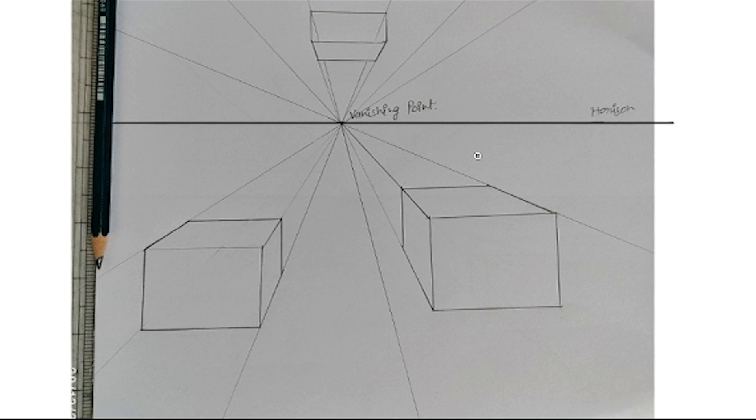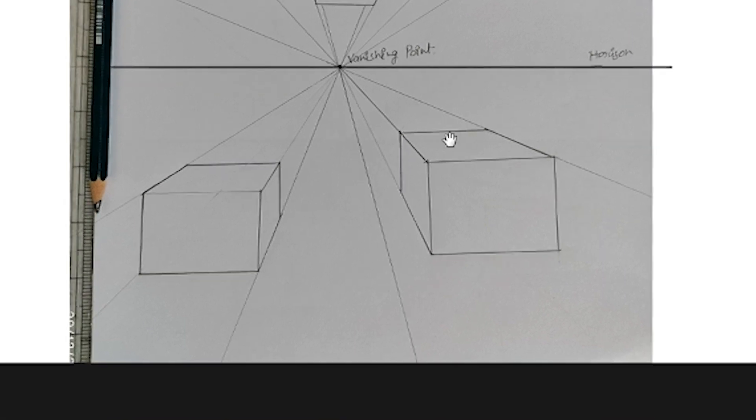This is a horizon line, and this is your vanishing point. Okay, so when we draw a square or rectangular shape, all the vanishing points will be the same.